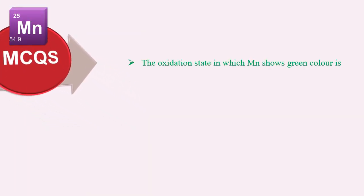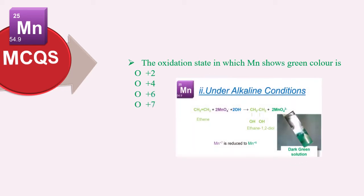MCQ: The oxidation state in which manganese shows green color is +2, +4, +6, or +7. Manganese in the +6 oxidation state is dark green in color, so the correct answer is +6.